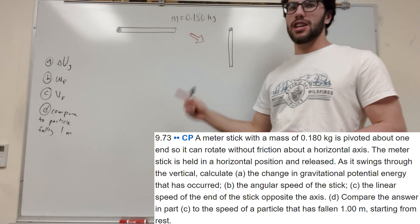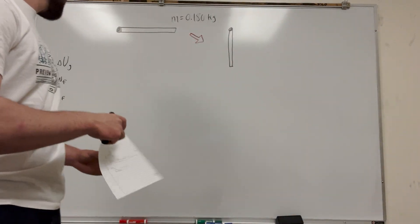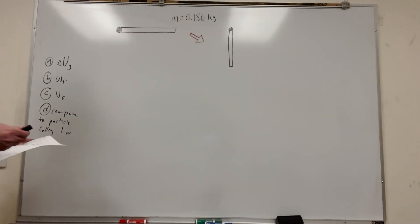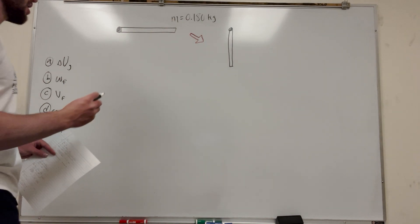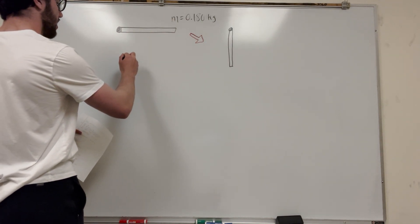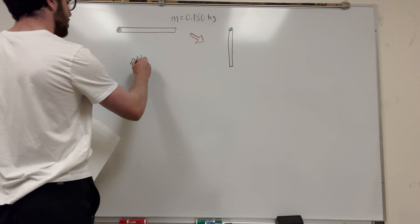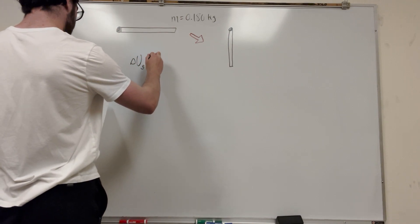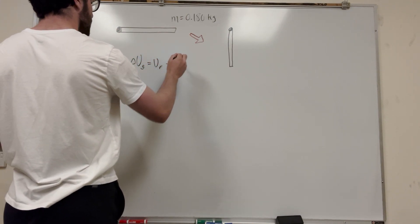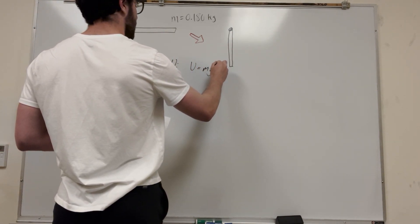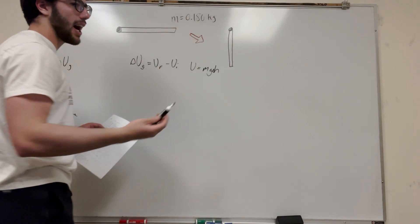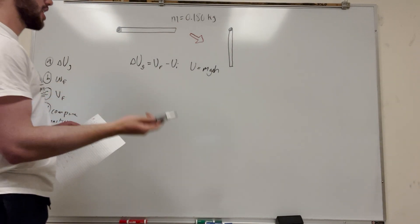So it wants to find just the change in gravitational potential energy, the change in angular momentum, the change in linear velocity, and it wants us to compare to a particle that falls off on. So let's start with change in gravitational potential energy. We know that change in gravitational potential energy is u final minus u initial. And then u is equal to mass, gravity, change in height.